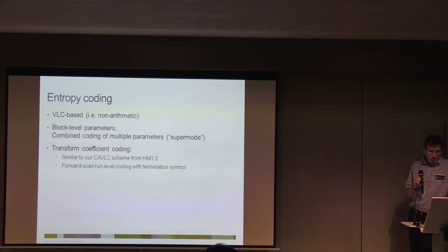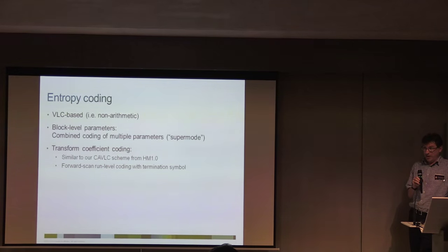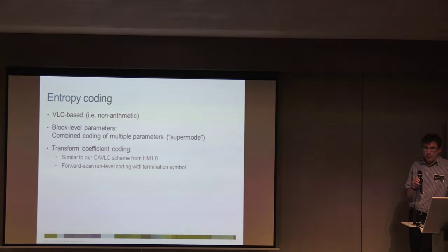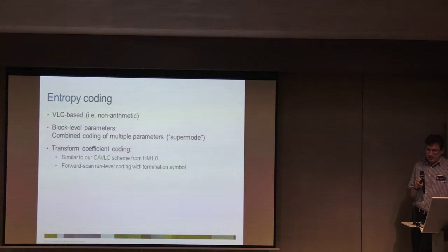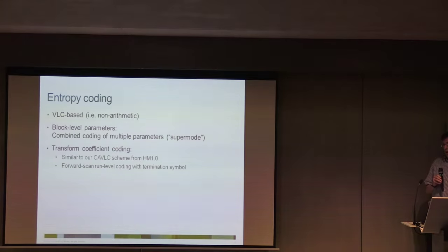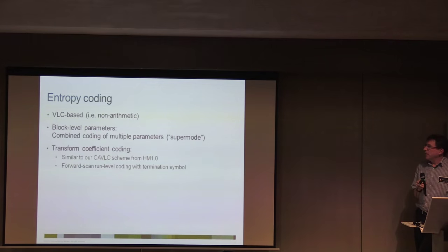The transform coding is very similar to what we initially proposed for H.265. It's a forward scan instead of a backward scan with a termination symbol, but basically it's running-level coding. And it works pretty well.